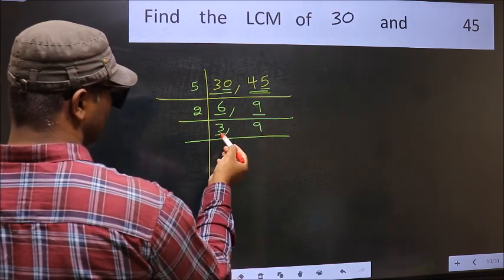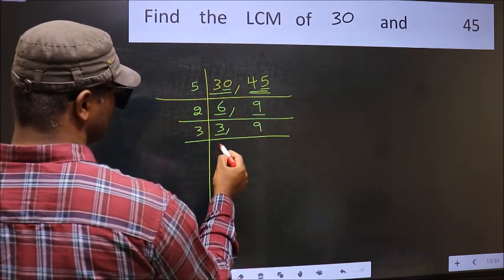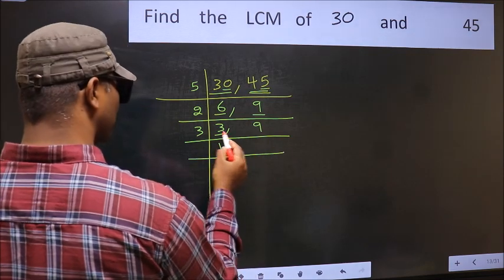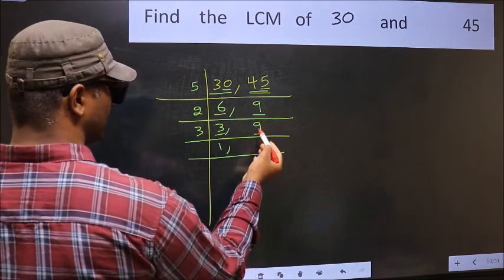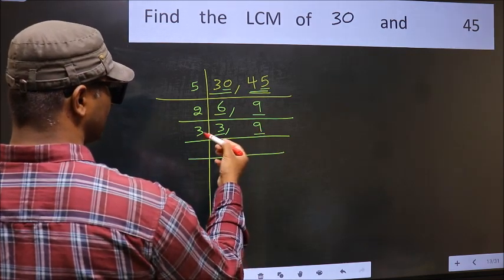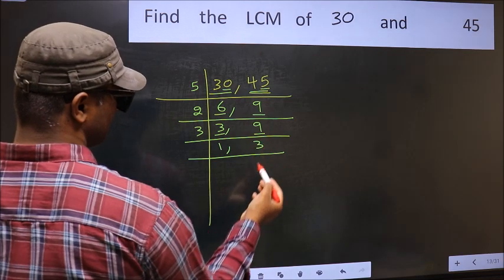Now we have 3. 3 is a prime number, so 3 times 1 is 3. The other number is 9. When do we get 9 in the 3 table? 3 times 3 is 9.